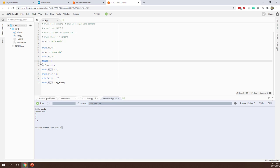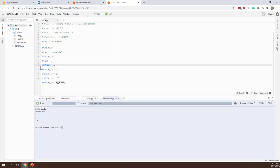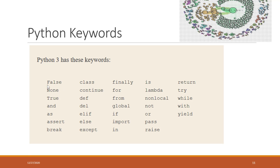Make sure your variable names are meaningful. Variables can start with letters or underscores, and can contain letters, underscores, and numbers. You cannot use Python keywords as variable names — keywords include False, None, True, and, as, etc. We will cover some of those keywords in future lectures.